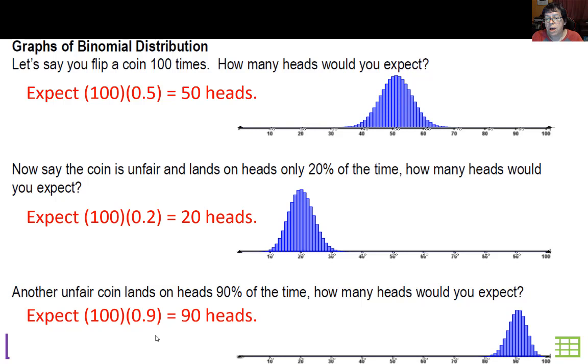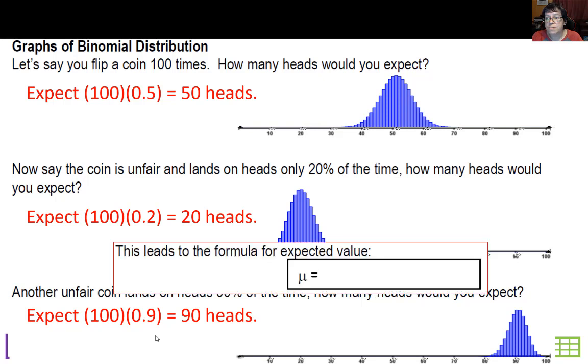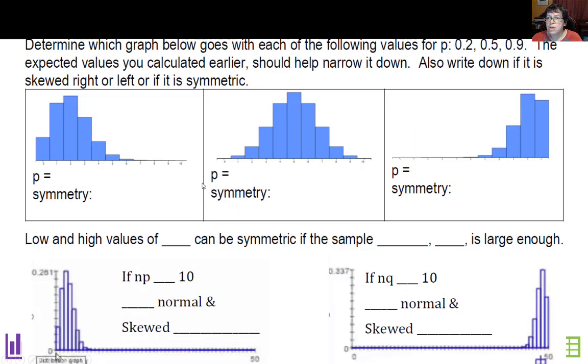This leads us to our formula for expected value: the number of trials times the probability of success on each trial, n times p. If these are a lot of flips, these distributions look approximately normal.